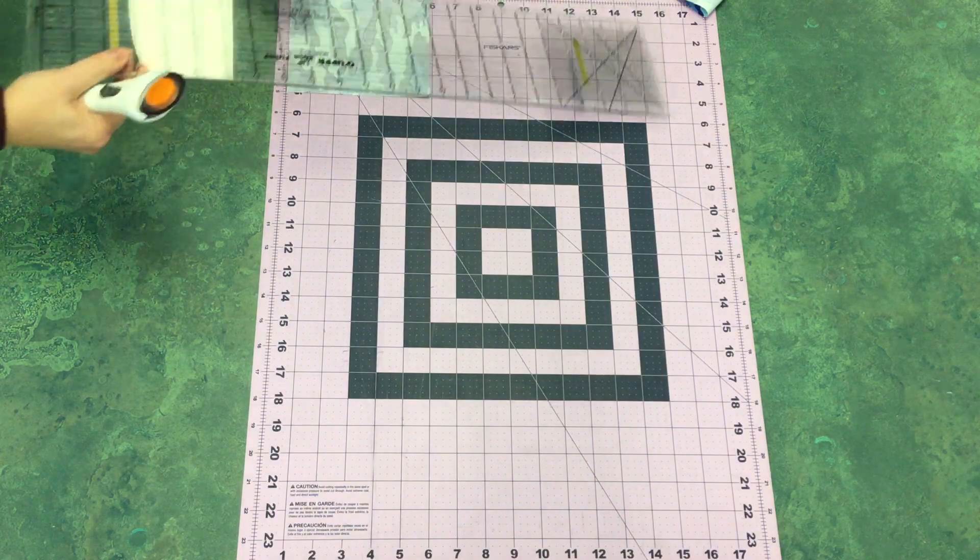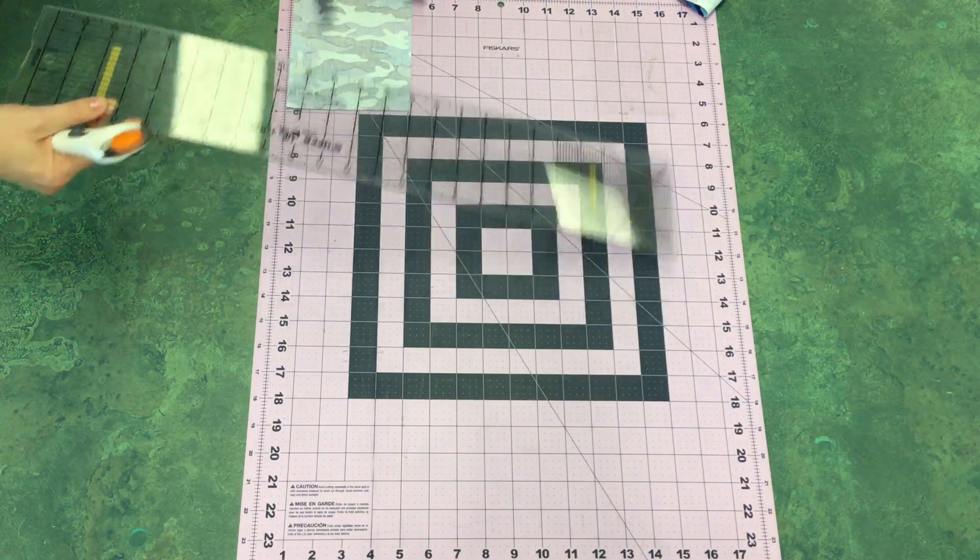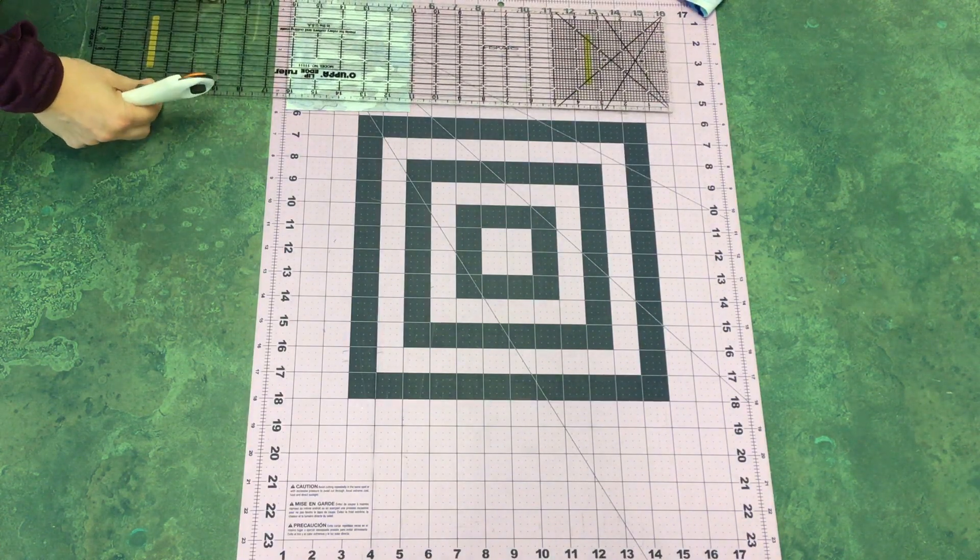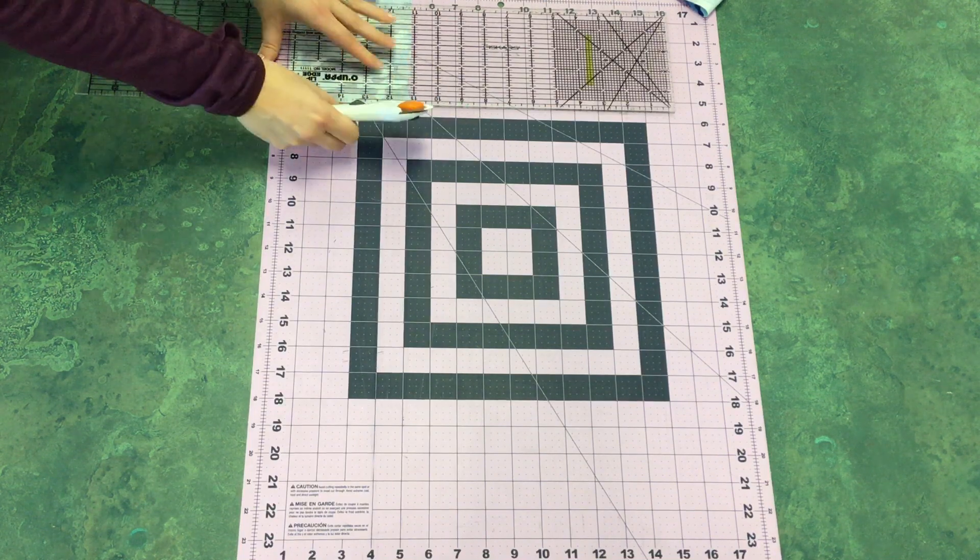This is our extra. We'll set that aside. I'm going to turn the fabric the other direction. It's just a little bit easier when I'm cutting away from myself rather than trying to cut on a horizontal.